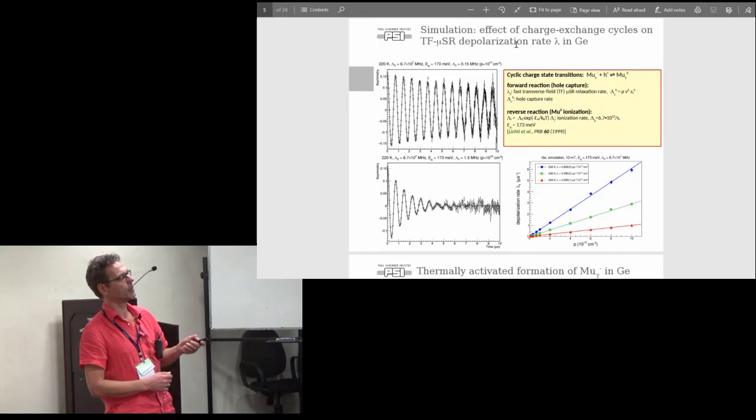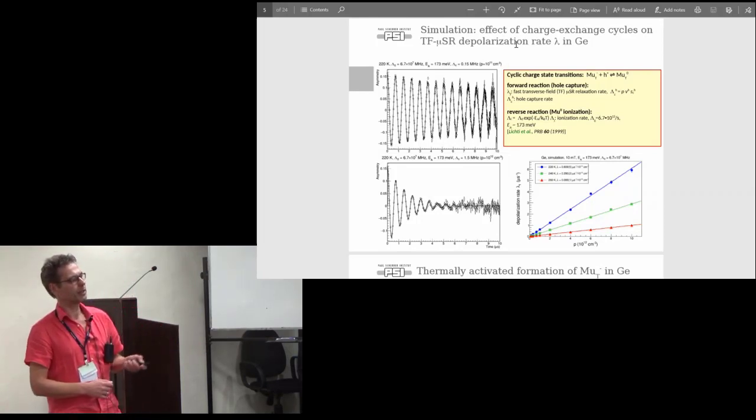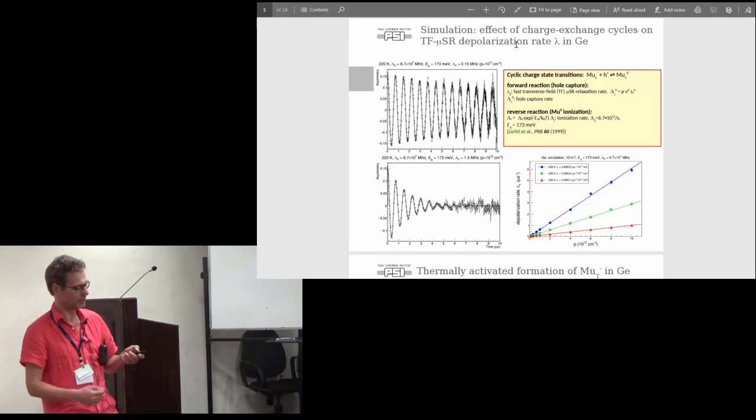If we increase the hole carrier concentration by a factor of 10, you see a much faster damping. In the simulation you can easily show that this is the depolarization rate, the envelope of this exponential decay, that it scales linearly with the hole concentration. This is at 220 Kelvin. If you increase the temperature, the depolarization rate goes down because the rate that the neutral muonium goes to the charged state is getting faster and faster the higher you are in temperature.